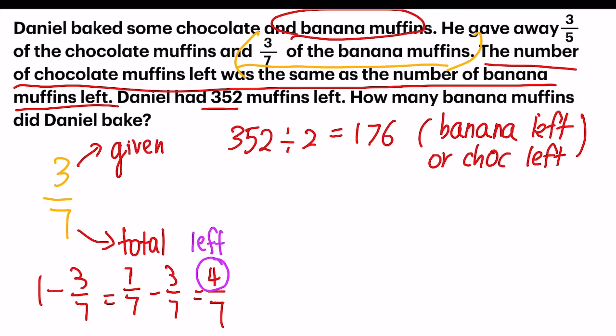So linking that to my question, four units equals 176. And the question wants to know how many banana muffins did he bake, which means I am finding seven units.